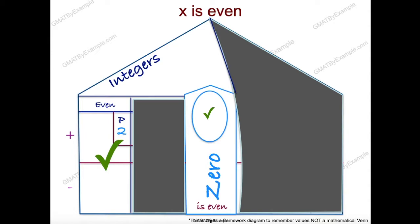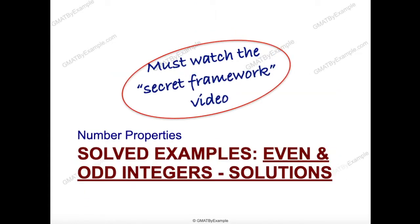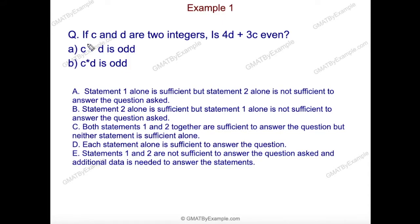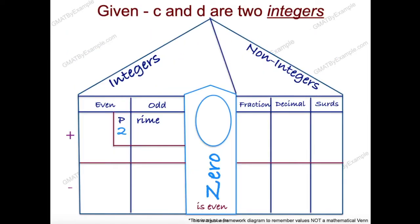Before we go further, if you have not watched my secret framework video on how to approach number theory problems, it will be beneficial to go back and watch it. Let's get started. In the question, we are given that c and d are two integers, and we are asked if 4d plus 3c is even. One thing you must immediately note is that this is a yes or no question, which means with any of the statements, I need to get a unique yes or a unique no to answer the question sufficiently.